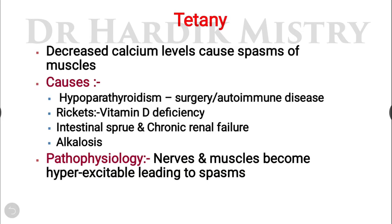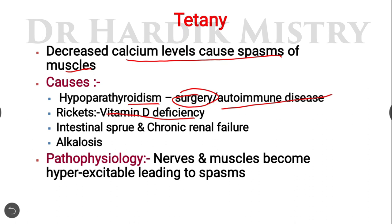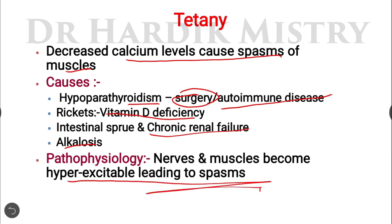Applied aspects: the first condition is hypocalcemic tetany, where decreased calcium levels cause muscle spasm. Causes include: hypoparathyroidism (due to surgery or autoimmune disease); rickets with vitamin D deficiency impairing calcium absorption from the intestine; intestinal sprue and chronic renal failure where calcium absorption is defective or impossible; and alkalosis. The pathophysiology is that nerves and muscles become hyperexcitable, leading to spasms.